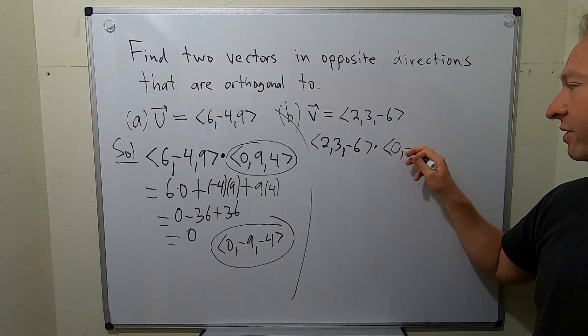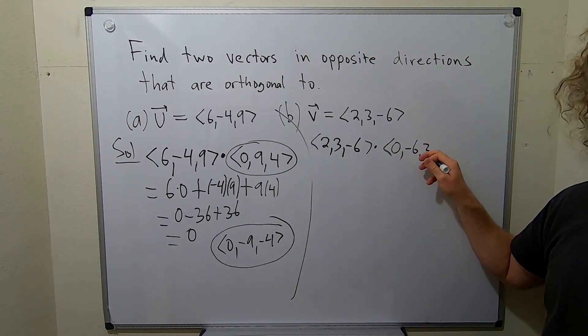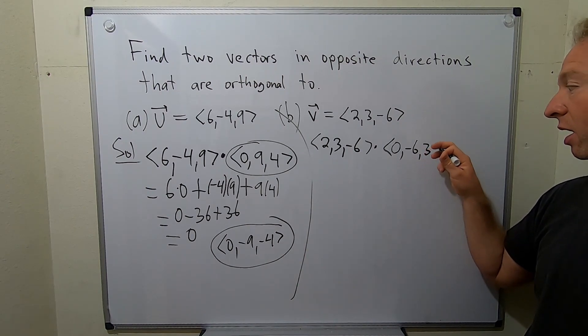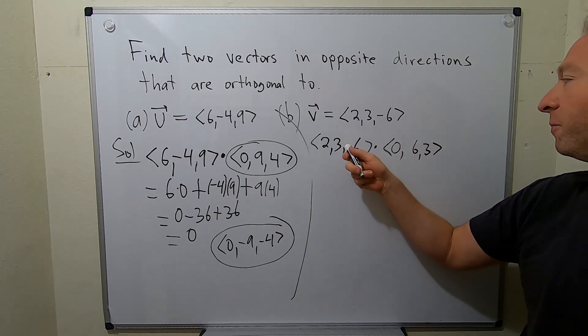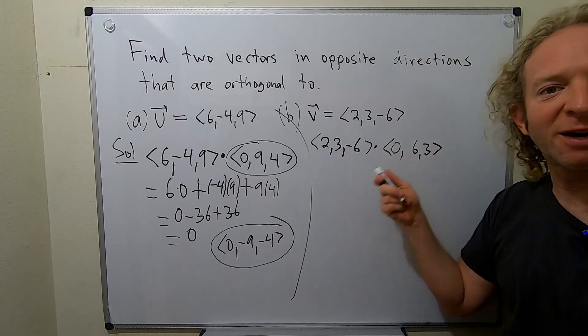So I'm just going to put a negative 6 here and I think a 3 here. I think that will work because that'll give us negative 18. Oh no no no. They both need to be positive. There we go. 18, negative 18. Yep that's it. Good stuff.